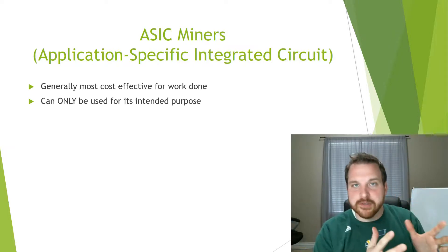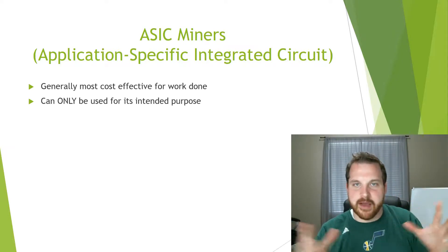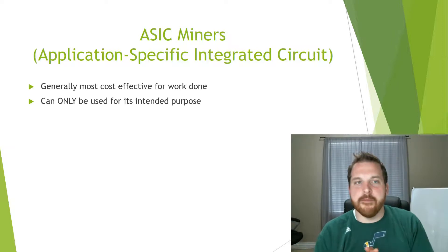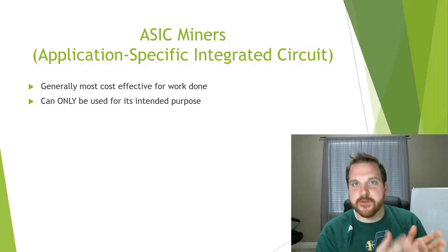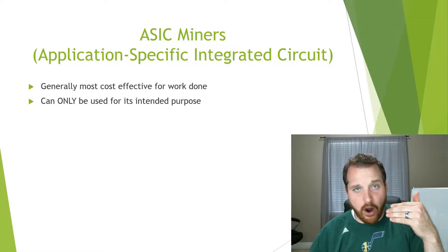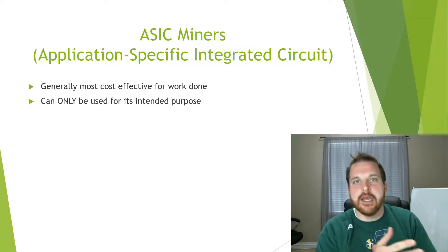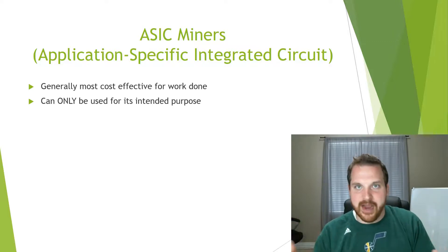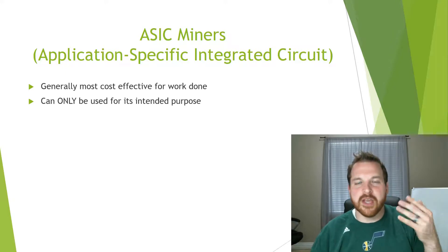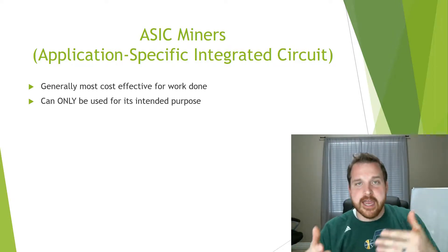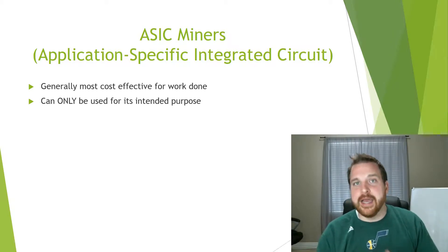ASIC miners are built by a company as a closed unit — like a small brick, sometimes a bit bigger. You plug them in and they go. They're super easy to use, already pre-set up. You just put in the address where you want the coins sent and it starts running. They are only made for that one purpose, so if that coin disappears or it's no longer cost-effective to mine, you can't do anything else with that miner. But it is the most cost-effective — biggest bang for your buck if you're specifically mining that coin.